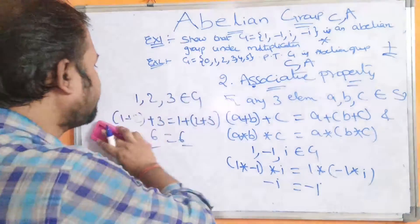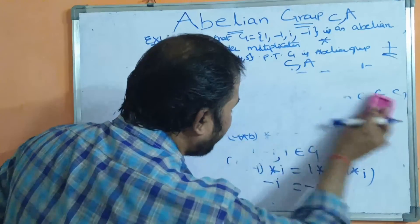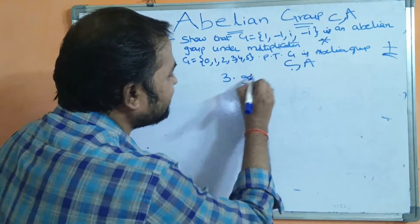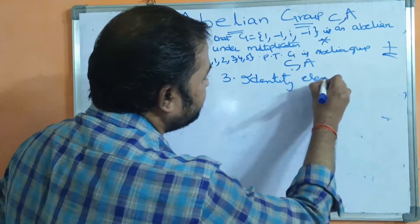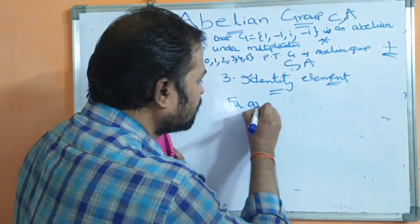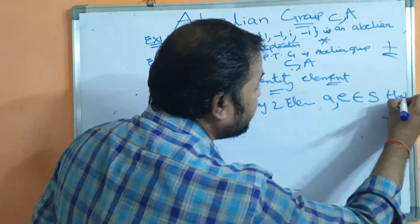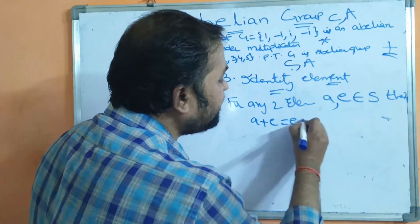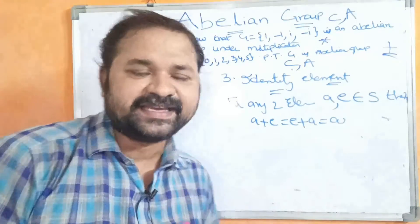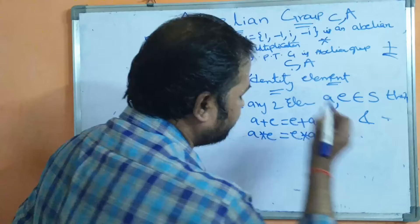The third property is identity element. It is better to say 'element' rather than 'property' for identity and inverse. For any element A belonging to S, if A + e = e + A = A, then identity element is satisfied. Here e means the identity element. For the star operation: A ★ e = e ★ A = A.